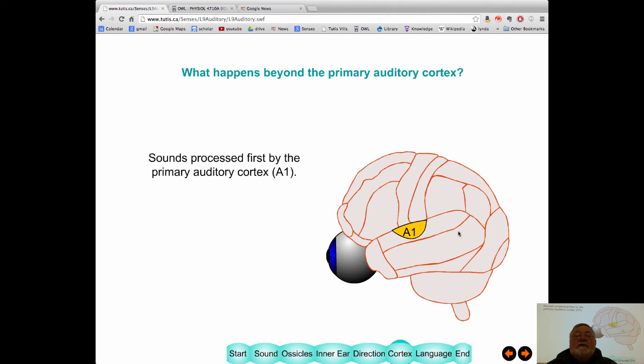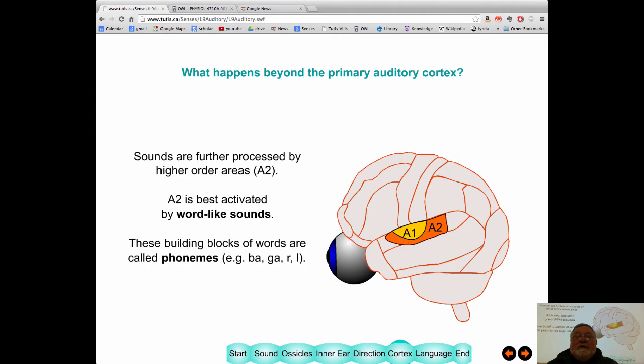Now, sounds are first processed in this thing called the primary auditory cortex, or A1. After that, they go to a place called A2. Now, what's different about the sounds of this thing here versus the sounds of this thing here? A1 will be activated by any sound. A2 is different. It'll be only activated by things that are word-like in nature. And by word-like, I mean things like pa-ga. And you will find out that these are things called phonemes. They're the building blocks.